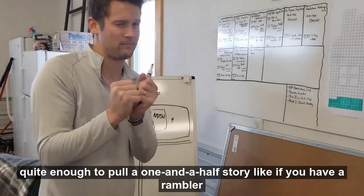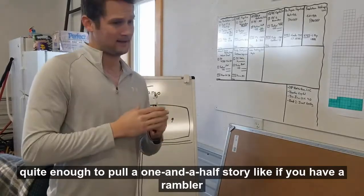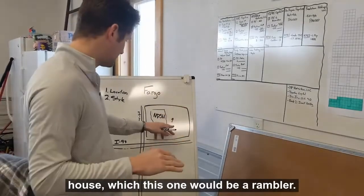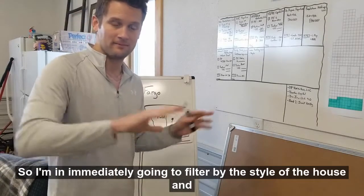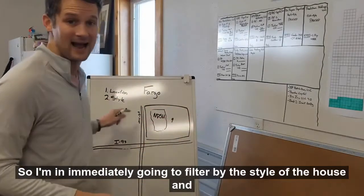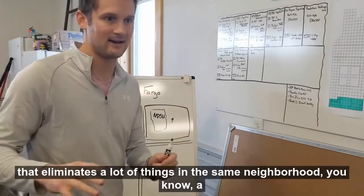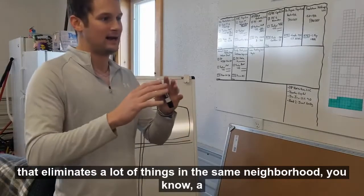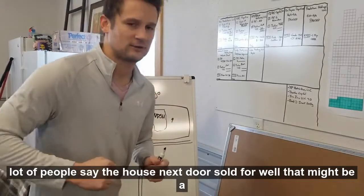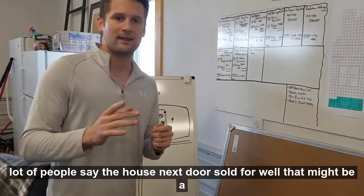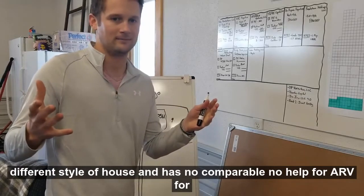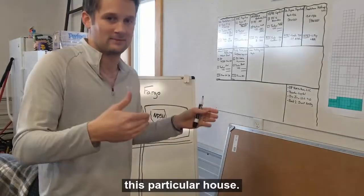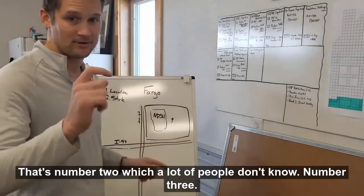Sometimes if they don't have quite enough, they'll maybe pull a one-and-a-half story. Like if you have a Rambler house, which this one would be a Rambler, I'm only going to be looking for Ramblers. So I'm immediately going to filter by the style of the house, and that eliminates a lot of things in the same neighborhood. You know, a lot of people say the house next door sold for—well, that might be a different style of house and has no help for our ARV for this particular house.